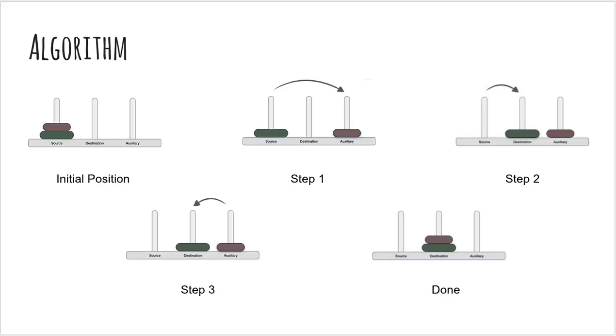If we have 2 disks, we first move the smaller one to the auxiliary peg. We move the larger one to the destination peg. We move back the smaller one from the auxiliary to the destination peg. And thus, we have moved the disks from the source peg to the destination peg.